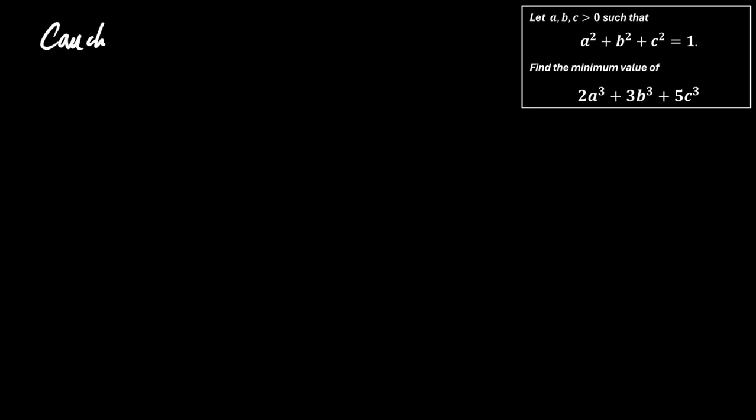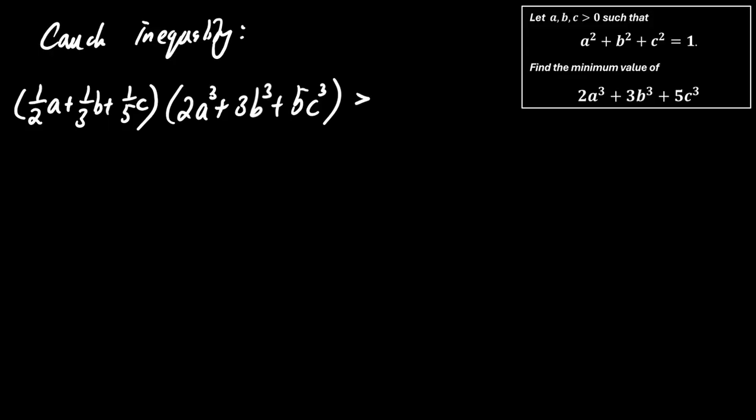Using the Cauchy inequality, we consider the following. Take the expression 2a cubed plus 3b cubed plus 5c cubed multiplied by 1 half of a plus 1 third b plus 1 fifth c. Cauchy tells us that this product is at least the square of a squared plus b squared plus c squared.